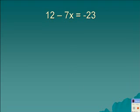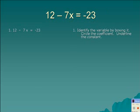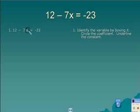The next problem is a little bit different. It's 12 minus 7x equals negative 23. Same thing as the last problem. The first step is we're going to identify the variable by boxing it. Notice here, the variable's in a different place. We're still going to box the variable.